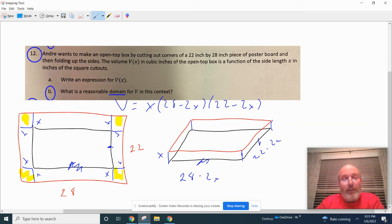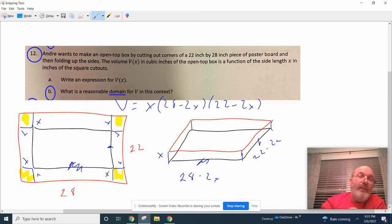So the reasonable domain is what values can you plug in where you cut these corners out for X. If you plugged in 14 for X, it's always going to be half of your short side is going to be the largest. If you cut 0 out of the corners then you wouldn't have a box.